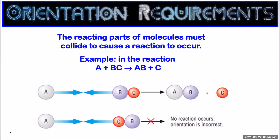It's not enough just to have the molecules colliding — the right parts of the molecule have to collide. In this example, to make AB from the reaction of A with BC, the A has to collide with the B part of the molecule. That way a new bond can form between A and B, and the old bond between B and C can break. But if A collides with the C part of BC, then no reaction is going to occur, because A can't make its bond with B.